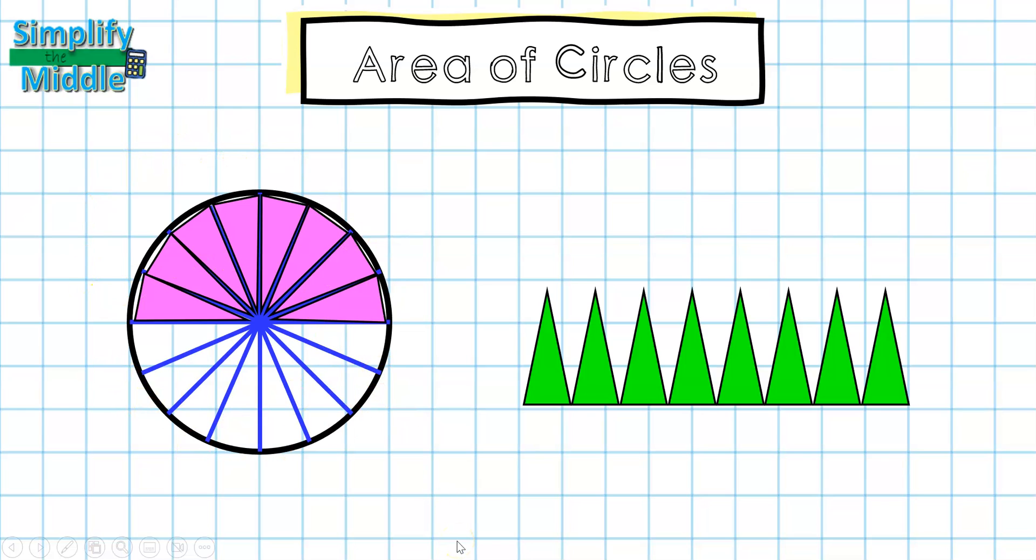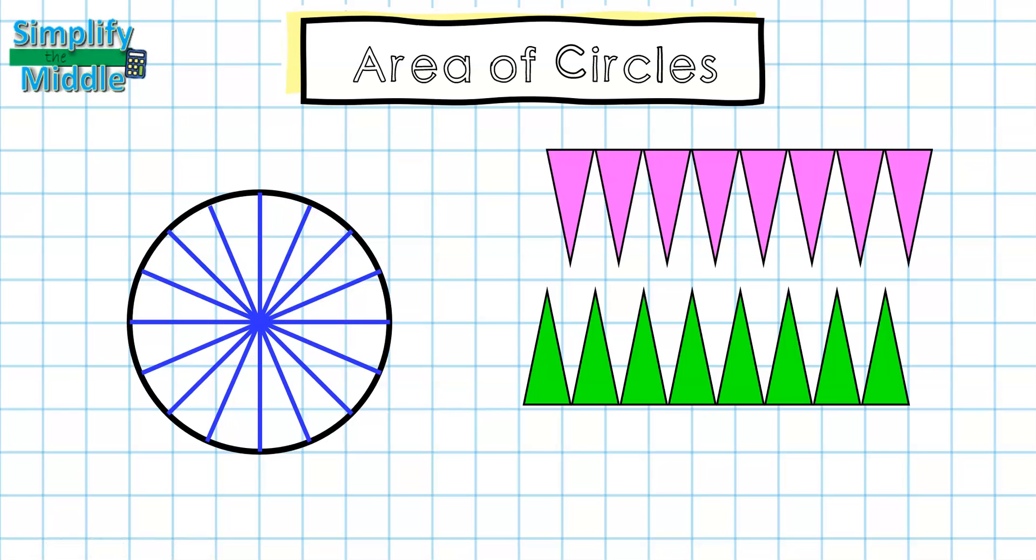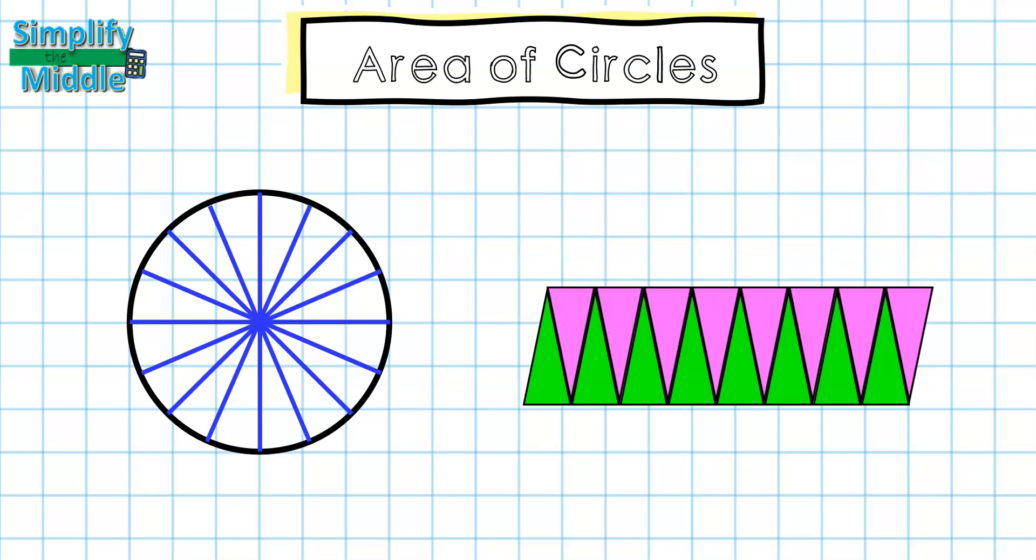So when I take out the pink section, I'm going to align those as well. But something interesting happens when I place them together. It creates what looks like a parallelogram, and this is going to help us understand where the formula for the area of a circle came from.